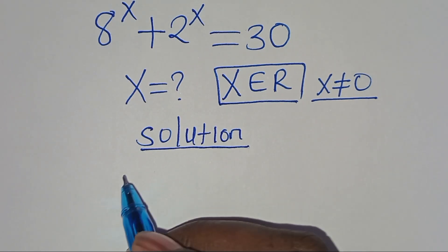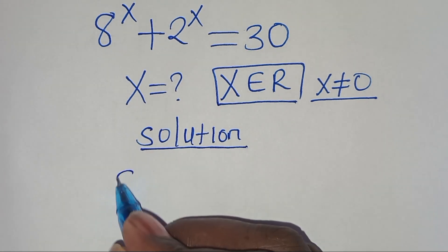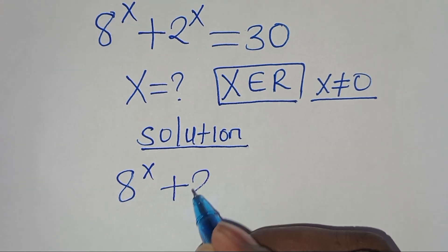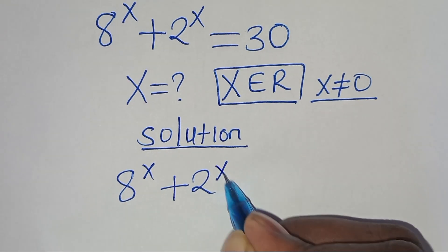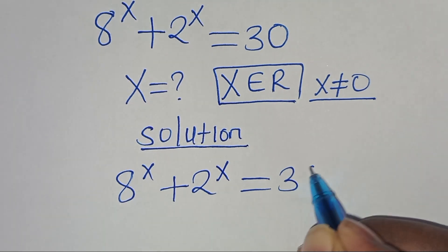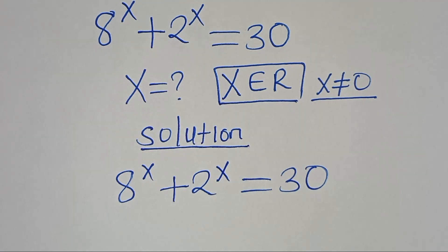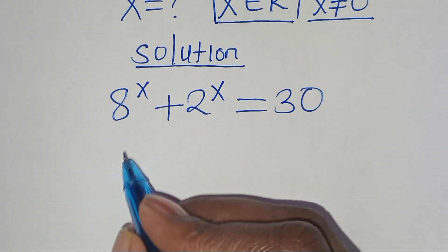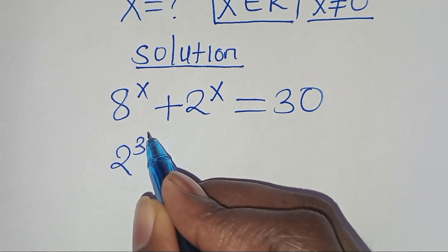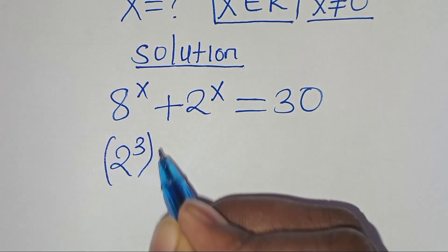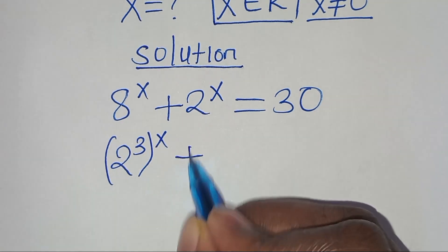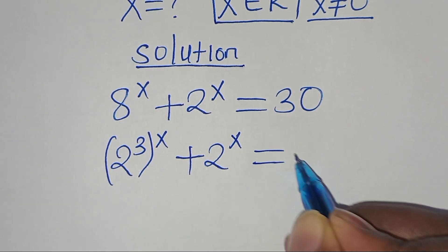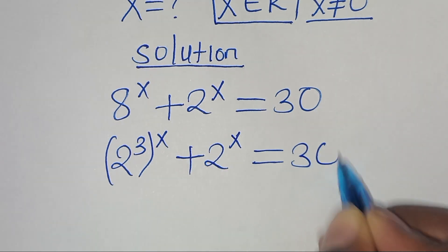So we have 8 to the power of x plus 2 to the power of x, and this is equal to 30. We can express 8 to the power of x as 2 to the power of 3, raised to the power of x, then plus 2 to the power of x. This is equal to 30.